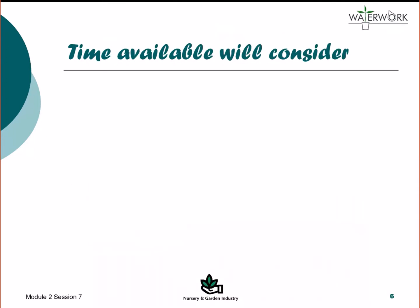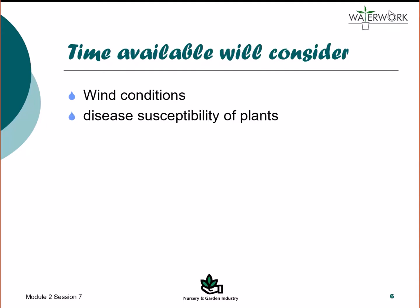To apply water in the time available, a range of factors need to be considered. The nursery operator needs to determine at what times the prevailing winds normally occur and whether the irrigation times can be set for when the wind is calm or light enough to prevent distortion of the sprinkler pattern. If not, windbreaks or a bottom watering or drip irrigation system may be needed. Some plants are susceptible to plant diseases if irrigated at night or if they have wet foliage late in the afternoon, so the operator should decide the best time to schedule irrigation or use a system such as drip irrigation that does not wet the foliage.